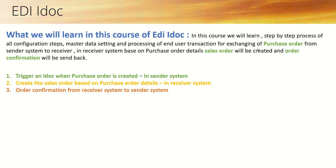The scenario we will cover: we will create a purchase order in the sender system, and based on that purchase order, a sales order will be created in the receiver system. After that, an order confirmation will be sent back to the sender system. To keep it simple, this is divided into three sections: first, triggering an IDoc when a purchase order is created in the sender system; second, creating a sales order based on purchase order details in the receiver system; and third, sending an order confirmation from the receiver system back to the sender.